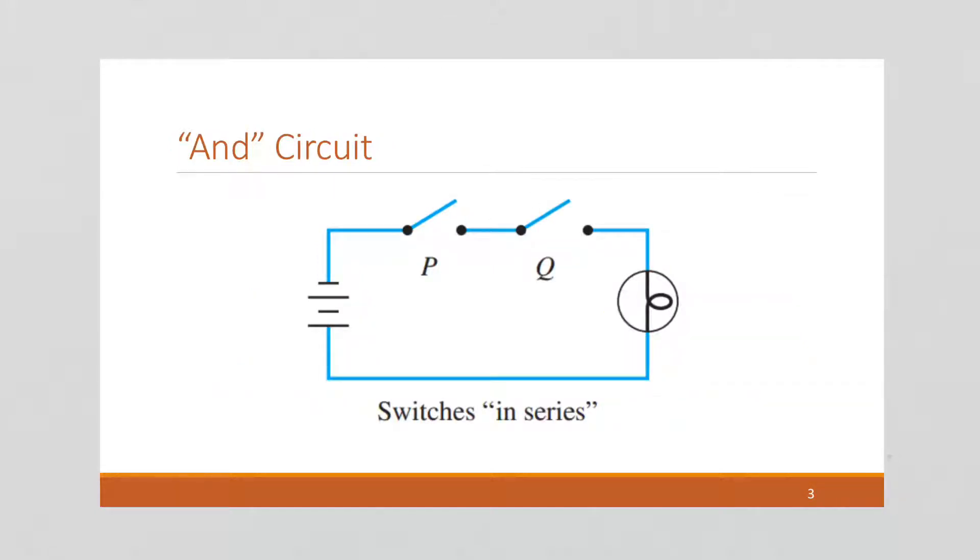This is an AND circuit. Notice that both P and Q, both these switches have to be shut for this to be a circuit and the light bulb to turn on. If even one of those is not closed, then our light bulb has no power. We need both P and Q closed, and then we get light. That's why this is an AND circuit.